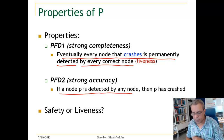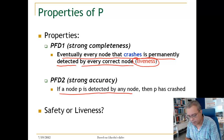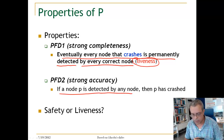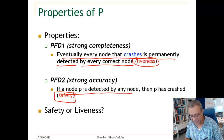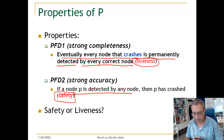We can look at these properties and determine whether they are liveness or safety properties. 'Eventually every node that crashes will be detected' is a liveness property — we have to wait until we detect the crash of a process. Strong accuracy is a safety property, because we do not want to falsely detect nodes as crashed.